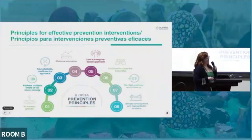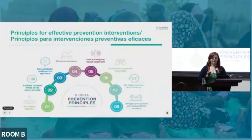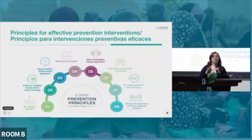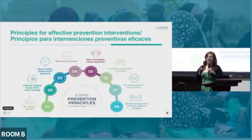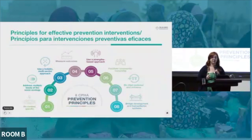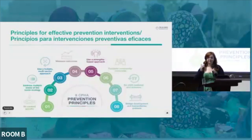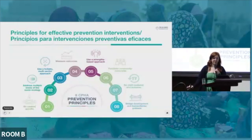The framework outlines eight key guiding principles for effective prevention programming, which can be applied across all phases. It talks about the importance of taking a multi-sectoral approach — we have to address the whole of the child. If we want to prevent harm before it occurs, we need to be working across sectors. Another key point is that we need to work across the socio-ecological model, and each of these principles are detailed further in the framework.